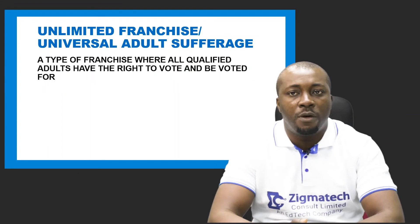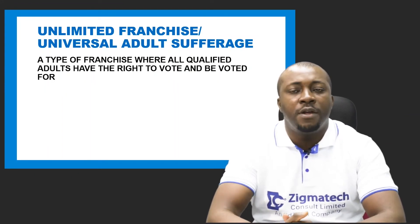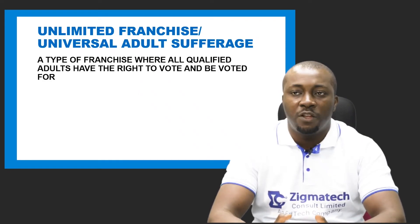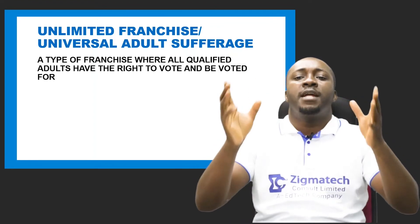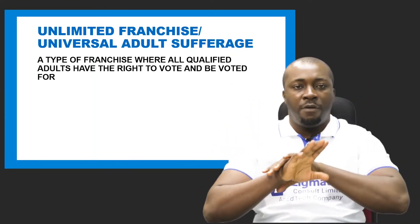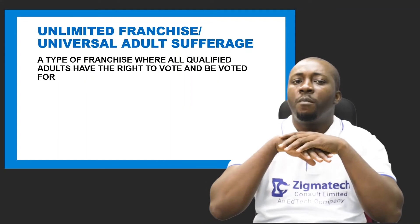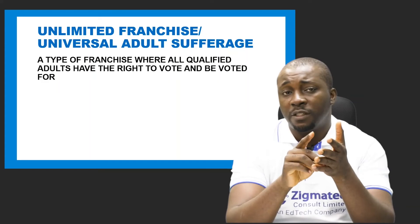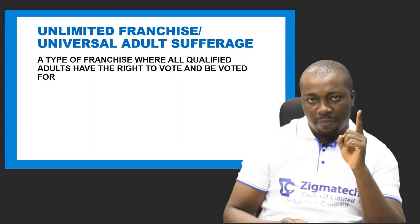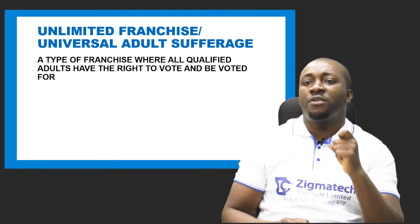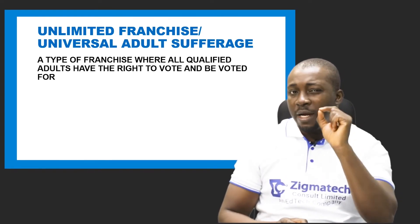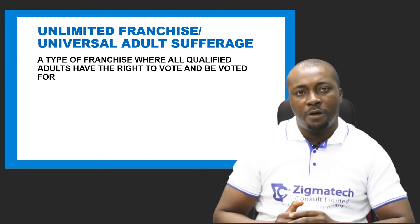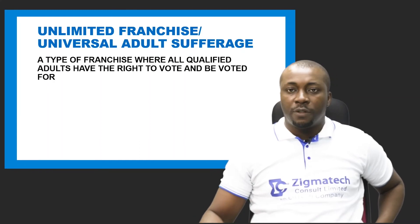The second type of franchise is what we call unlimited franchise or universal adult suffrage. Universal adult suffrage is a type of franchise where all qualified adults have the right to vote and be voted for — there is no form of restriction. The only restriction in most cases under universal adult suffrage is age. There must be an adult of the age specified by the constitution of the country before you can participate in the electoral process.